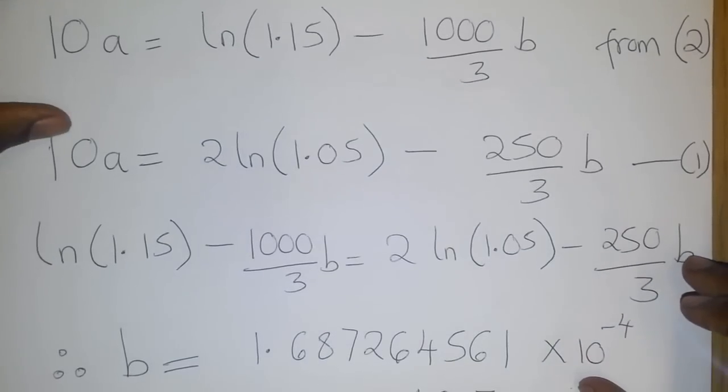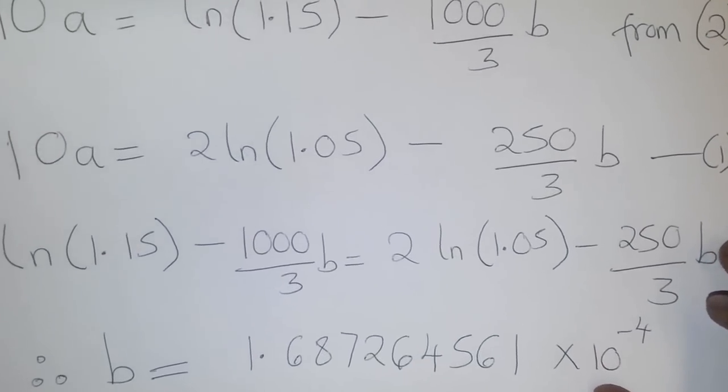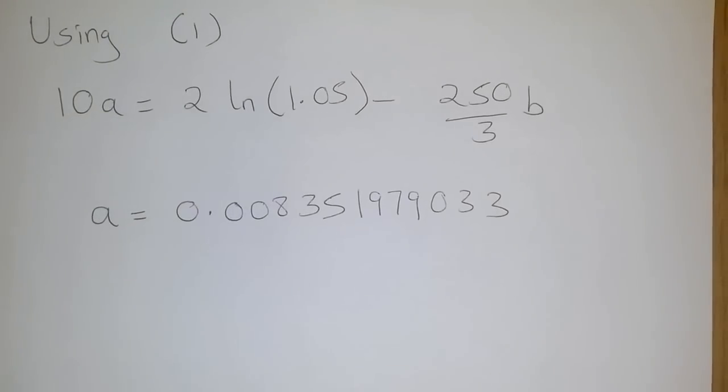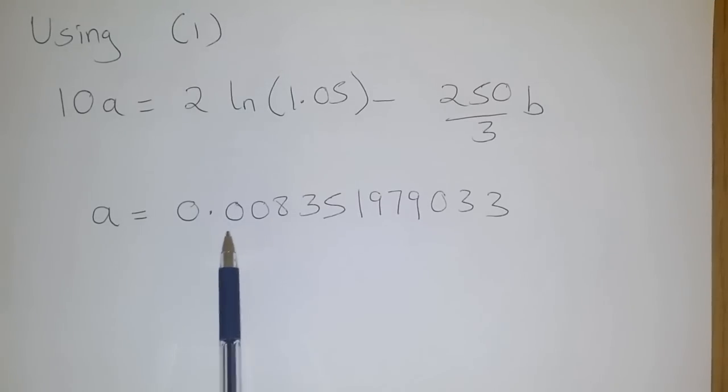Now, using the value of b to work out the value of a, we simply substitute the value of b into equation 1 such that we have the value of a as equal to 0.00835.